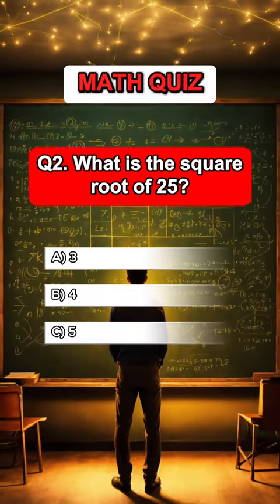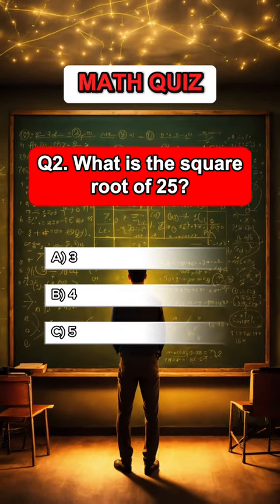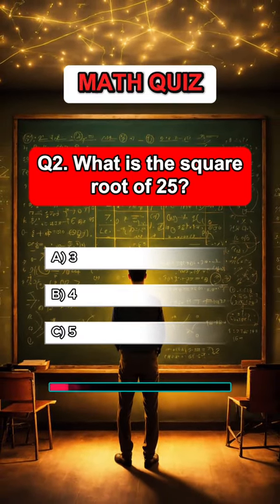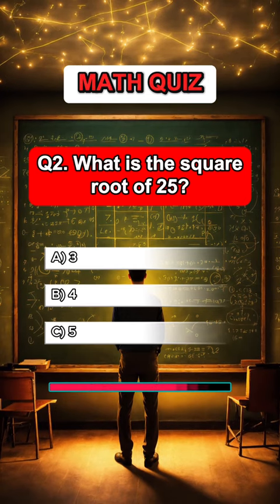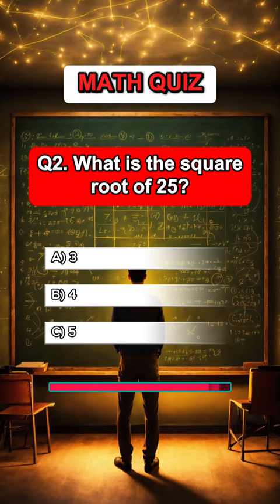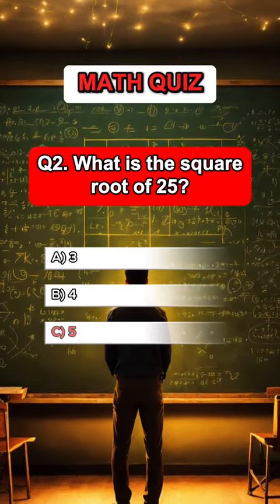Question 2. What is the square root of 25? Answer C, 5.